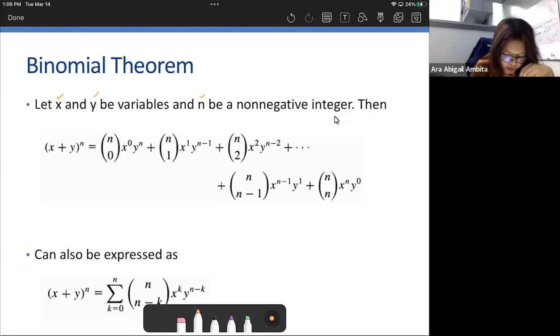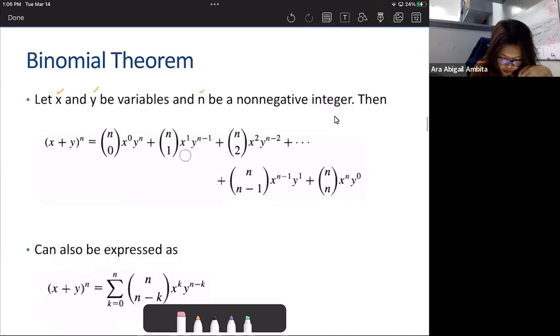So it is equivalent to n choose 0, or maybe also written as combination of n taken 0, then x raised to 0, and then y raised to n, plus n choose 1, and then x raised to 1, y raised to n minus 1, plus n taken 2, x squared times y raised to n minus 2,